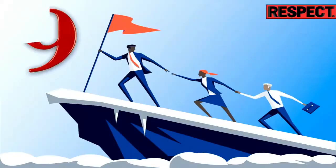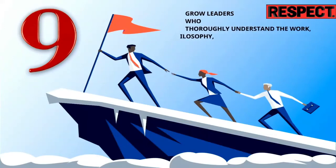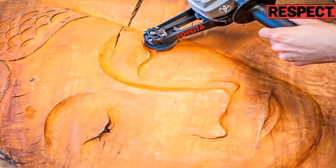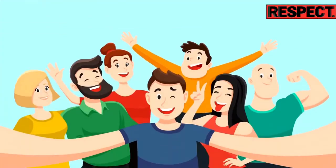Principle 9: Grow leaders who thoroughly understand the work, live the philosophy, and teach it to others. Toyota believes in developing leaders over 10 to 20 years. Toyota leaders always have good people skills. They also truly believe in Toyota Production System and Toyota Way.